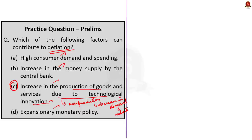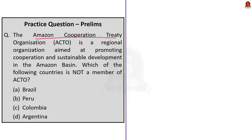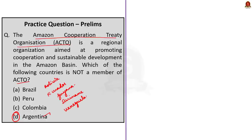Question 3 is about ACTO. The Amazon Cooperation Treaty Organization is a regional organization aimed at promoting cooperation and sustainable development in the Amazon Basin. Which of the following countries is not a member of ACTO? Option A: Brazil, Option B: Peru, Option C: Colombia, Option D: Argentina. The correct answer is Option D — Argentina. The members of ACTO are Brazil, Peru, Colombia, Ecuador, Bolivia, Guyana, Suriname, and Venezuela.